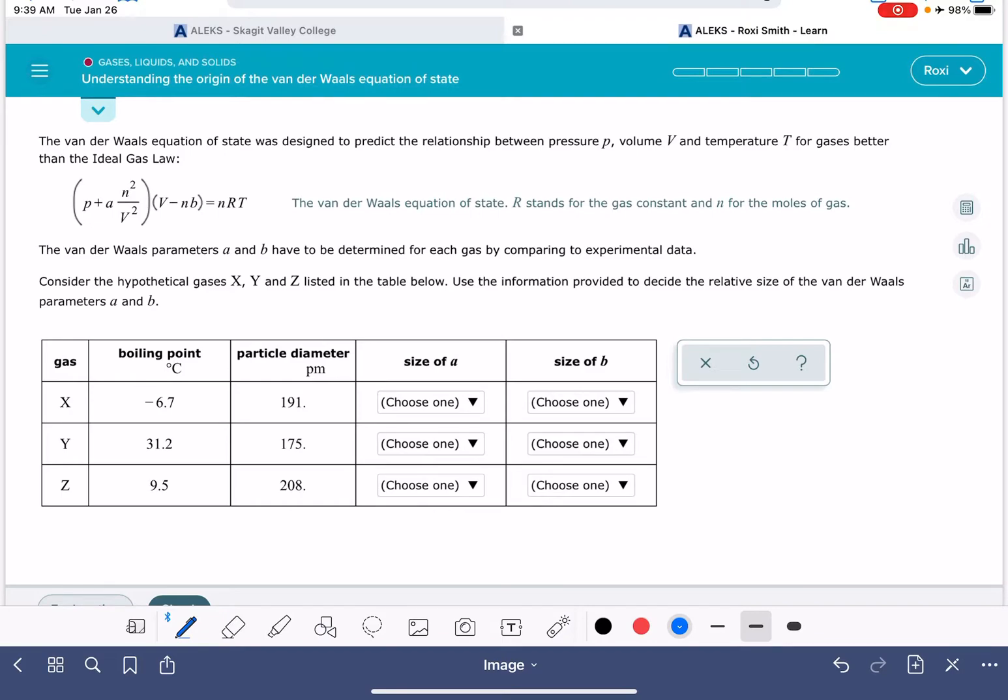We're going to start with the particle diameter. This is the size of the molecules in the gas sample. That's just a fancy way of saying how big are the molecules. So this 208 is the biggest gas molecule in the sample, and this is the smallest gas molecule.